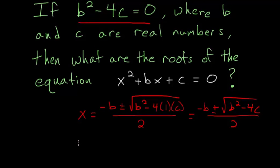So we can simplify again that x is equal to minus b plus or minus the square root of zero divided by 2. So this becomes minus b over 2.